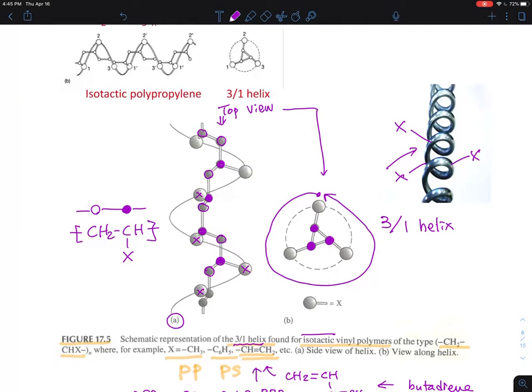There are a lot of different kinds of polymers with different helical structures. Some have three over one, some have nine over five, and there are others.